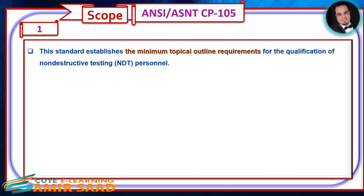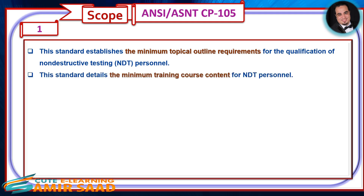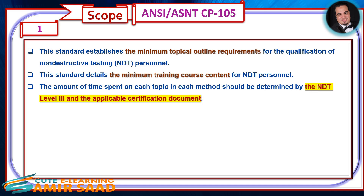Scope of ANSI/ASNT CP-105: This standard establishes the minimum topical outline requirements for the qualification of non-destructive testing personnel. This standard details the minimum training course content for NDT personnel. The amount of time spent on each topic in each method should be determined by the NDT Level 3 and the applicable certification document.